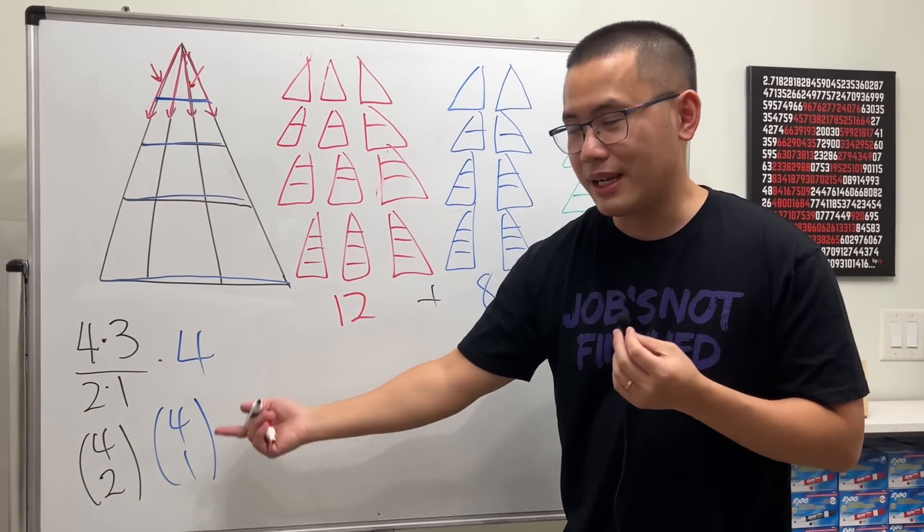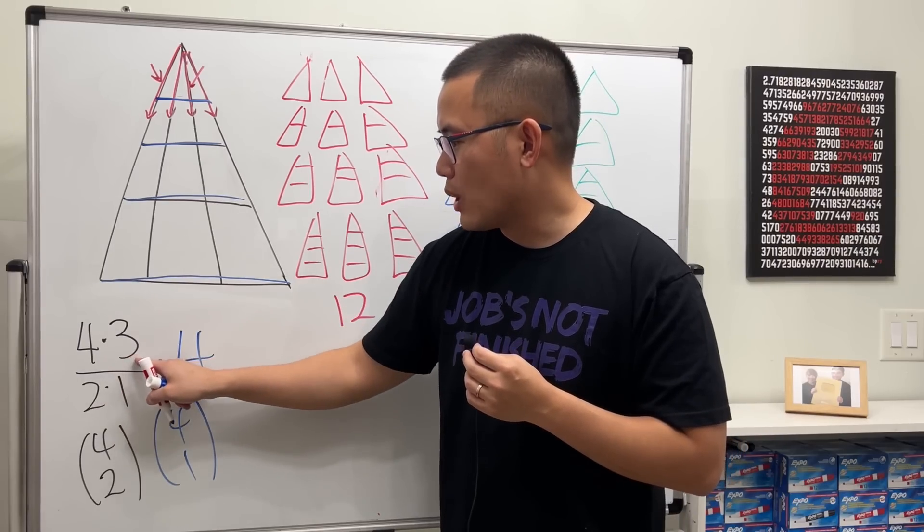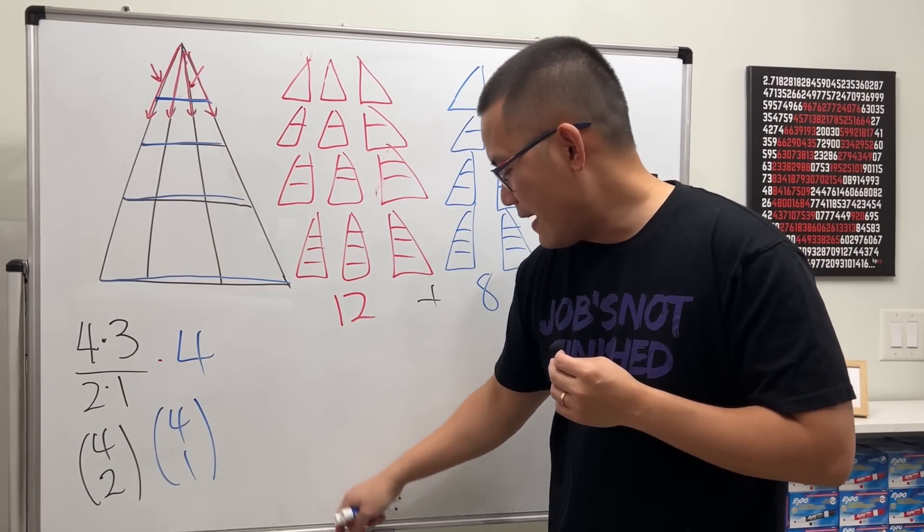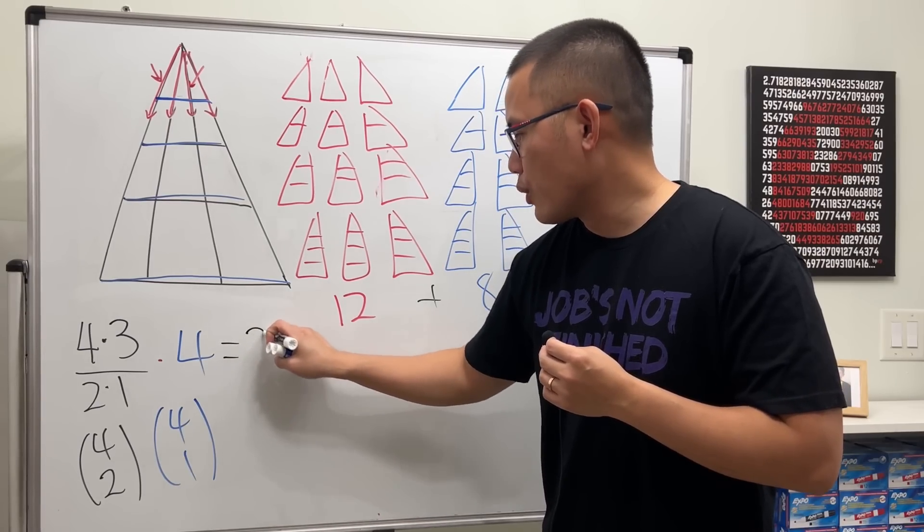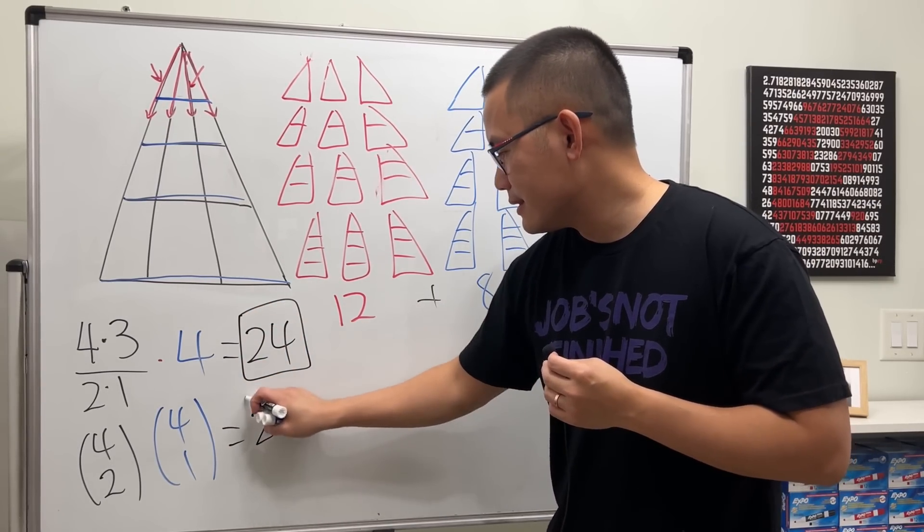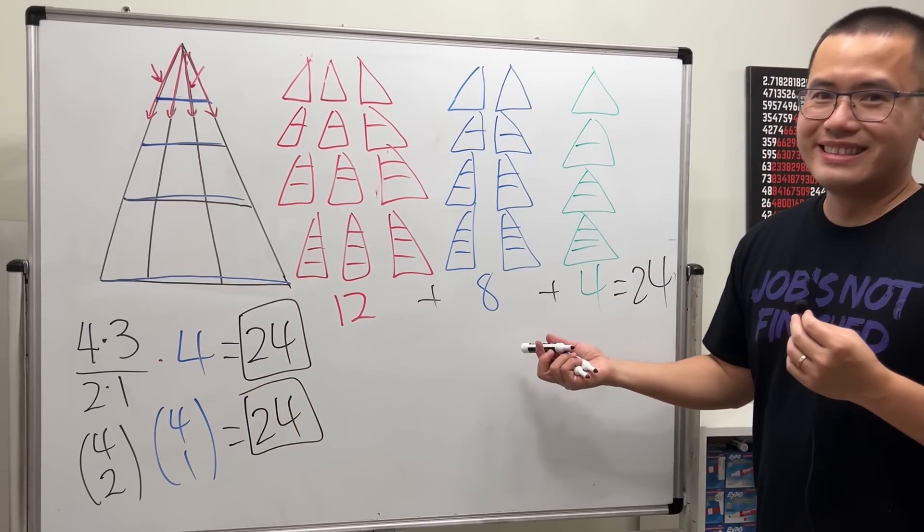This is how you compute that, and if you work this out, 12 divided by 2 is 6, 6 times 4. In fact, this right here gives us 24. So is that. And now I would like to give you guys an interesting question.